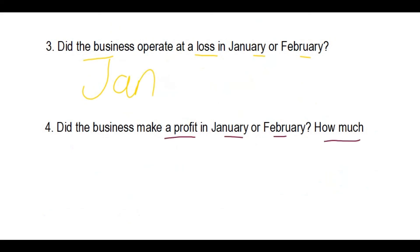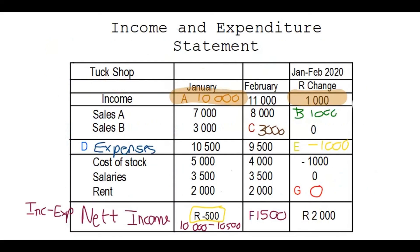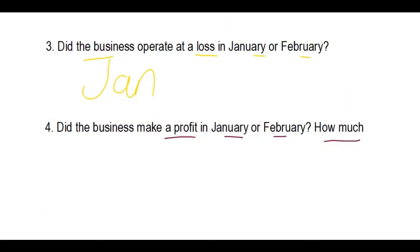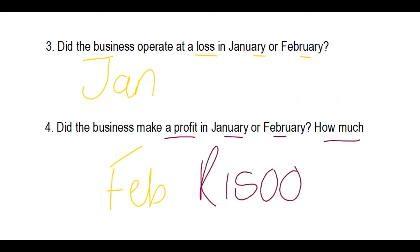Did the business make a profit in January or February, and if so, how much? In February there was 1,500 rand extra because the income was 11,000 and the expenses were less than that. So they definitely made a profit — 1,500 rand profit in February. That's the end of our video. Please remember to share, like, subscribe, and become part of the Whiteboard Essay team.